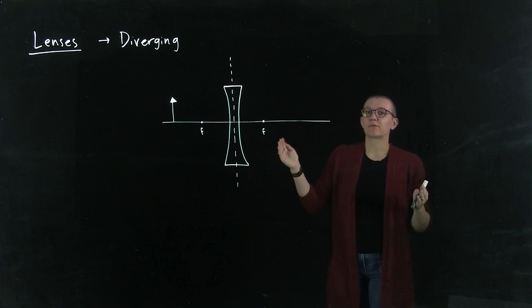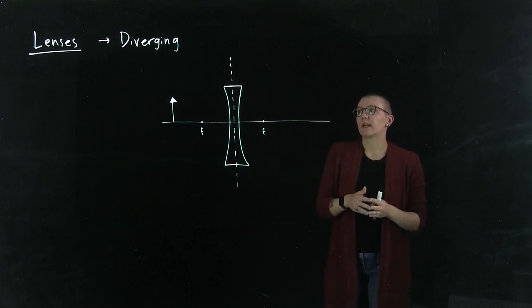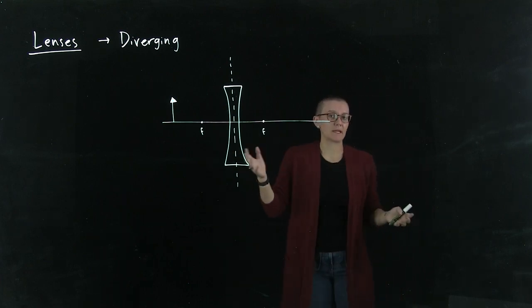Remember, a converging lens converges light to a single point. A diverging lens will separate light—it will diverge light.